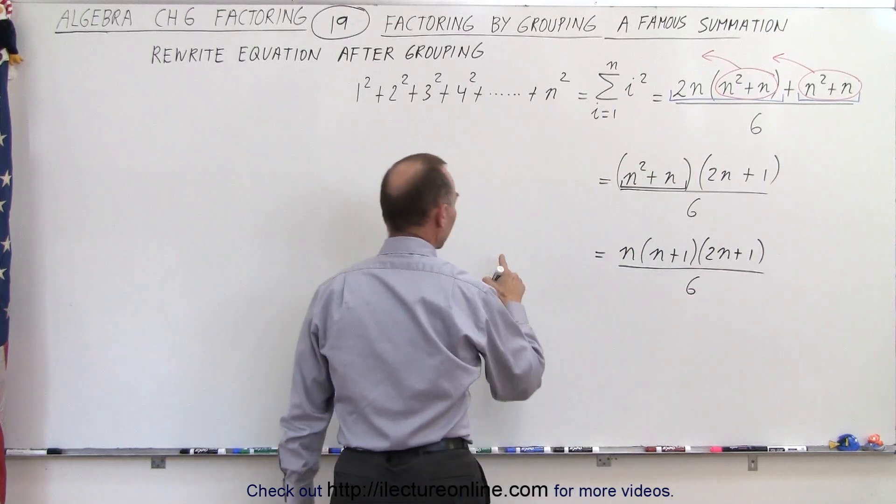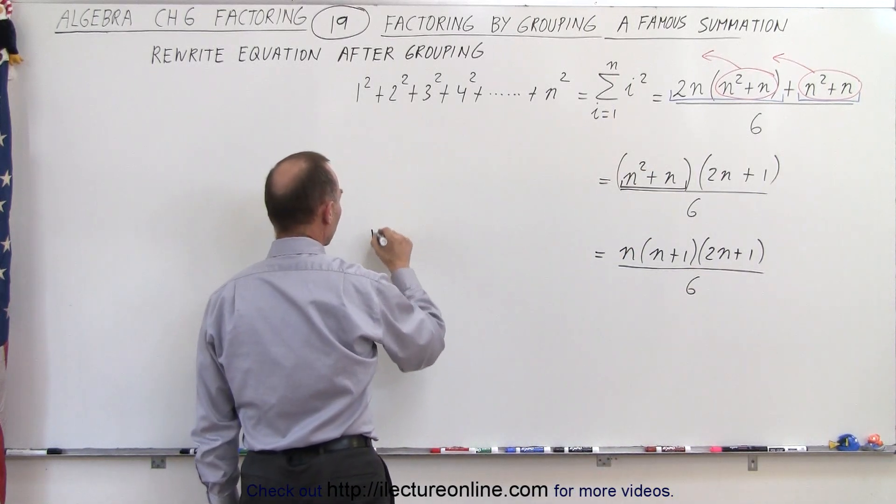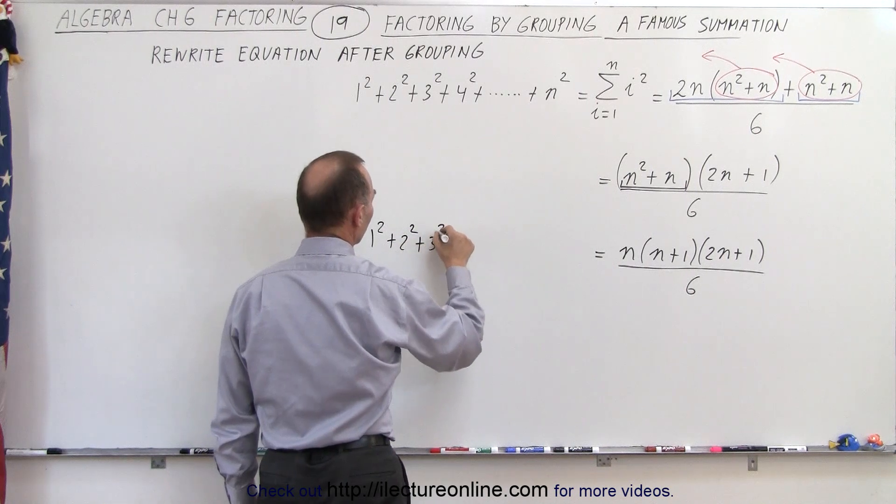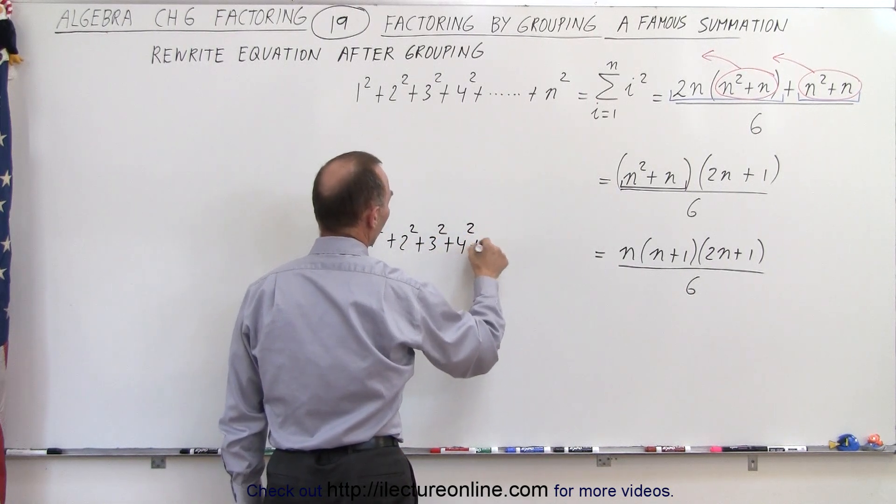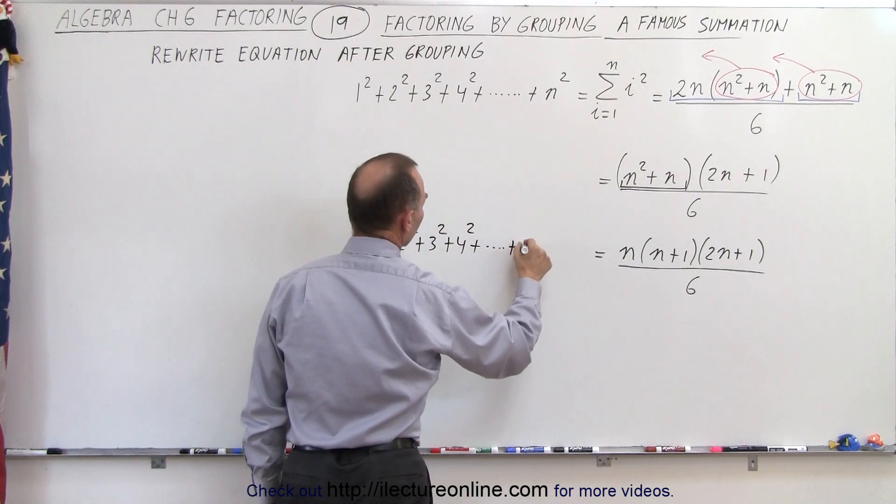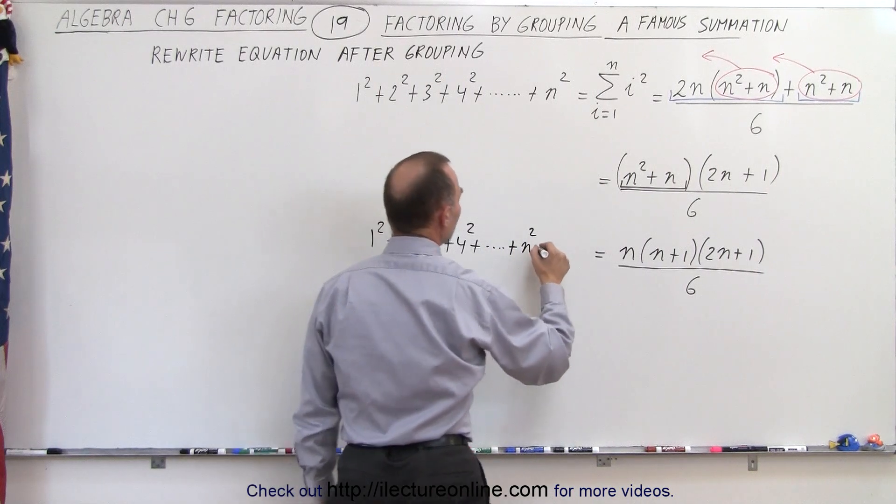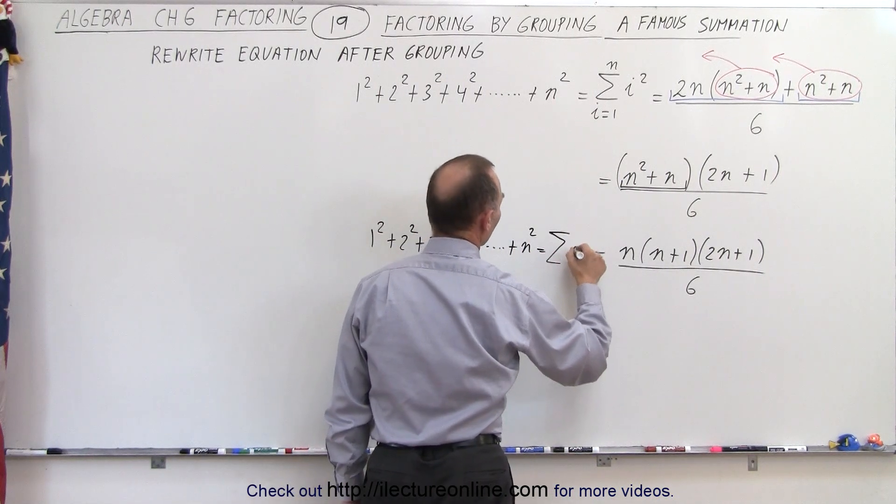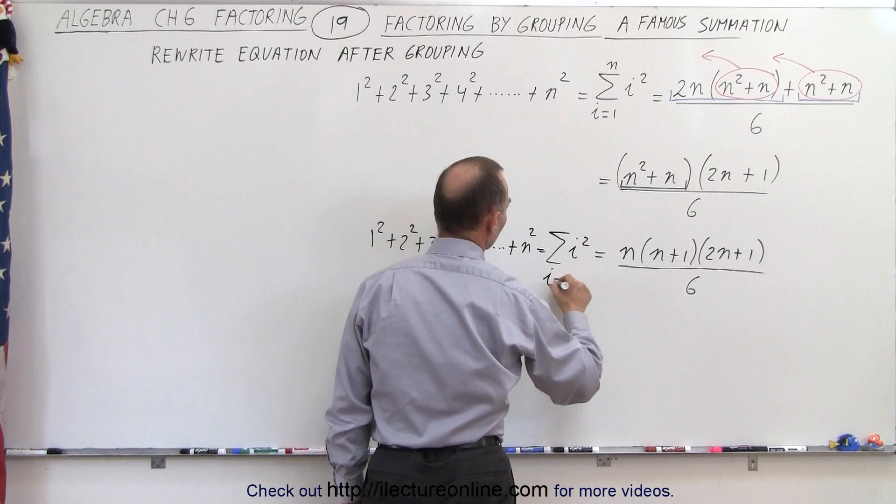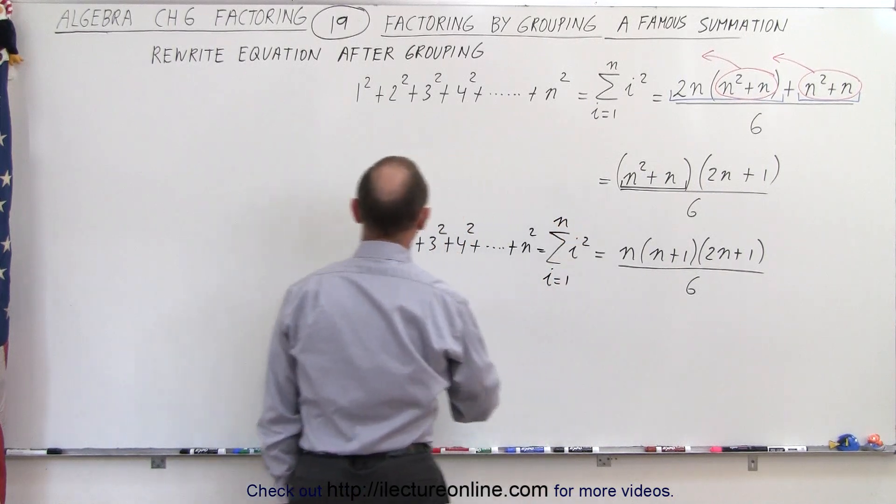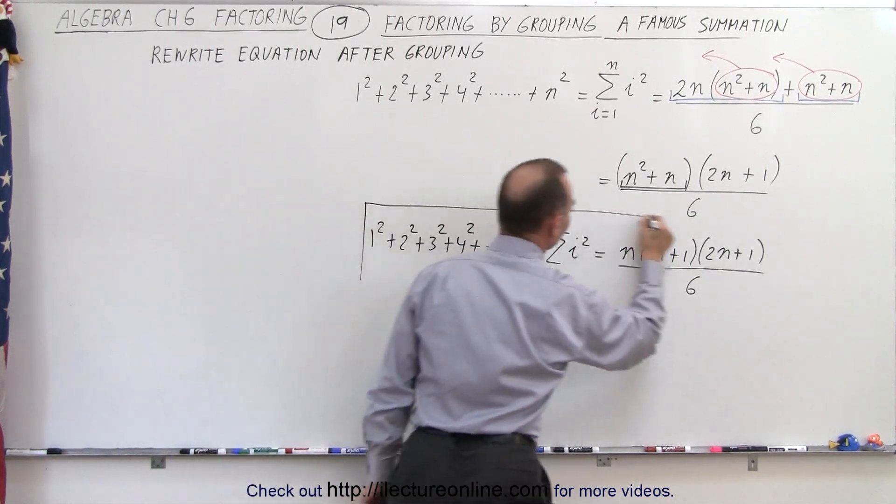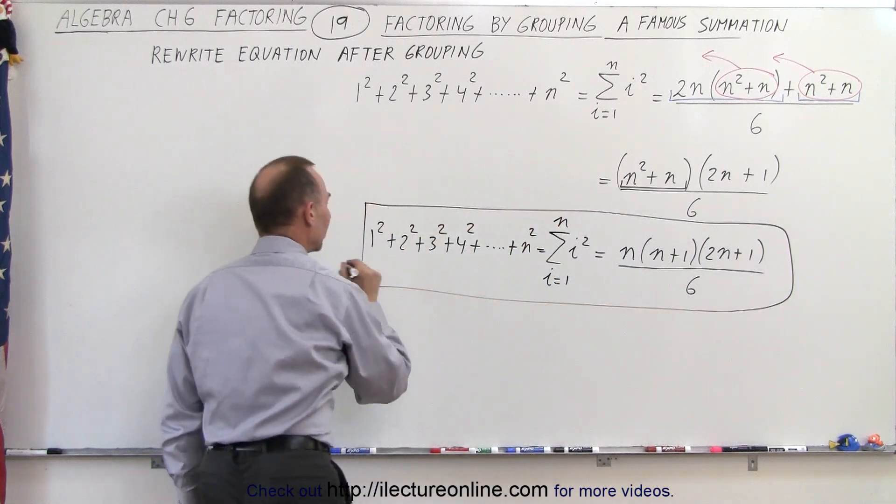And we can claim that this is equal to 1 squared plus 2 squared plus 3 squared plus 4 squared all the way up to n squared, which means that this is equal to the sum of i squared when i goes from 1 to n. And this is a very interesting form of that equation.